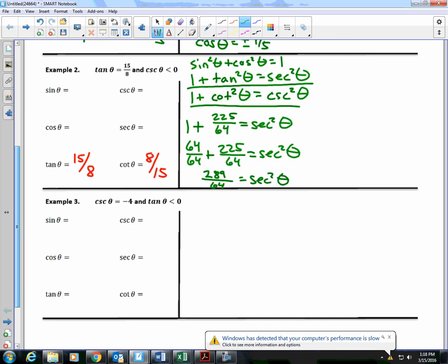How do I solve? Square root of both sides. Square root of 289 over 64. What's square root of 289? 17. What is the square root of 64? 8. We get 17 over 8.